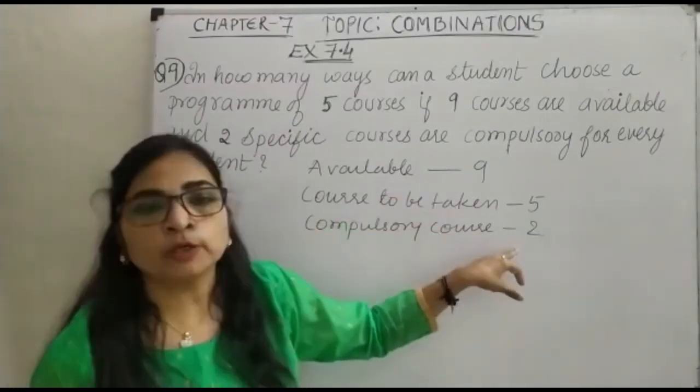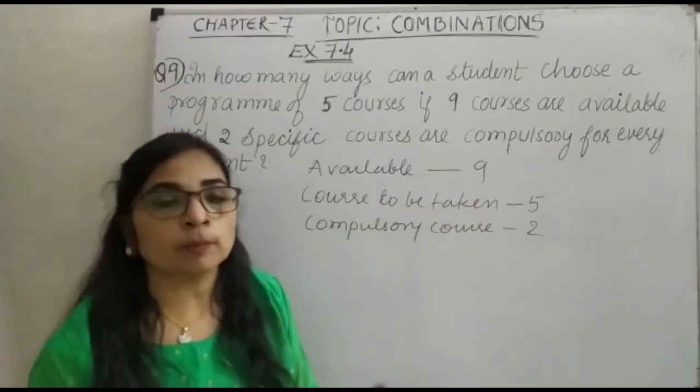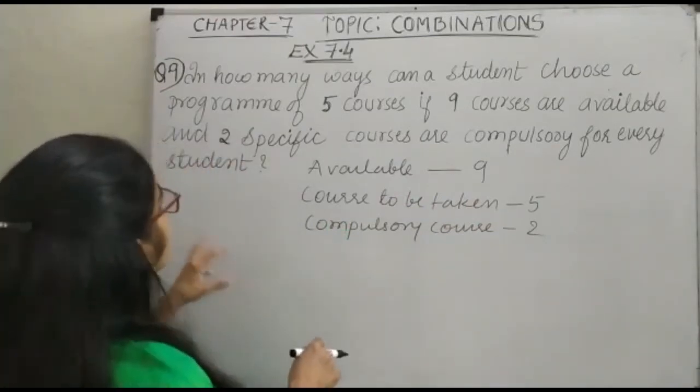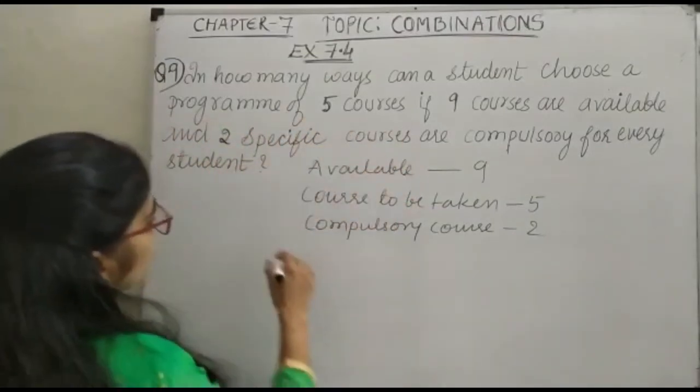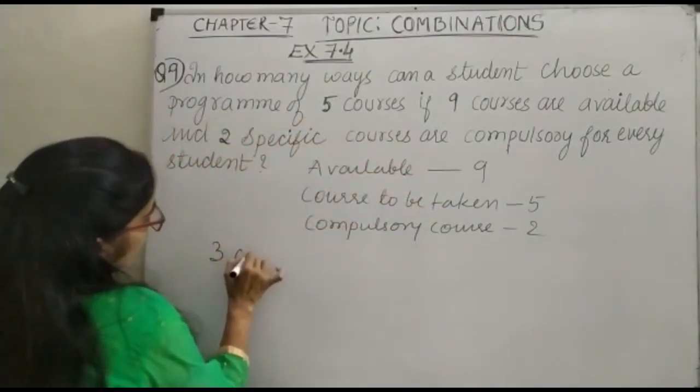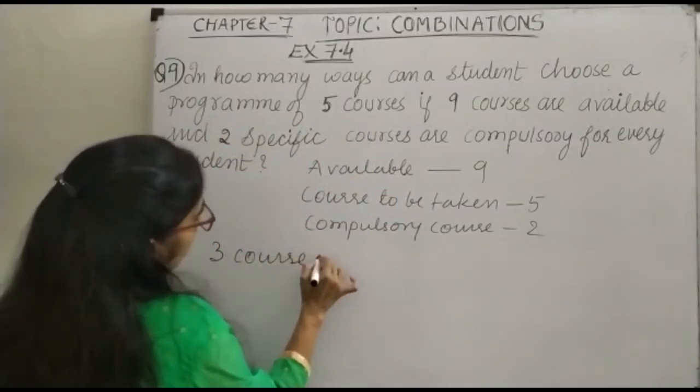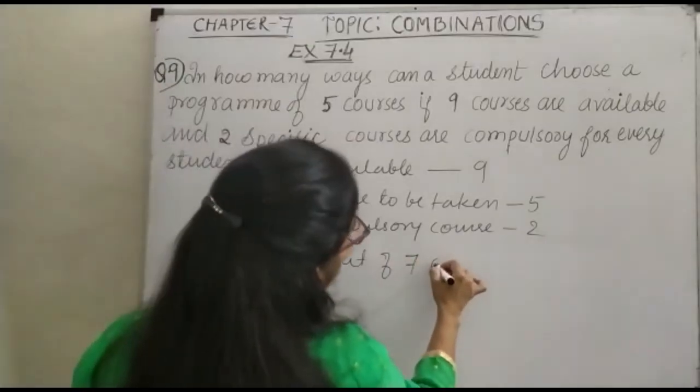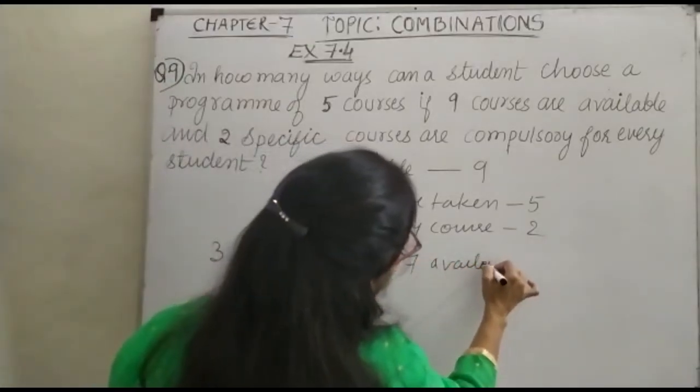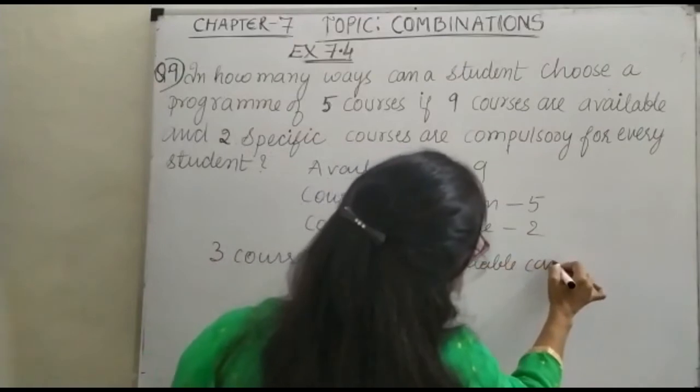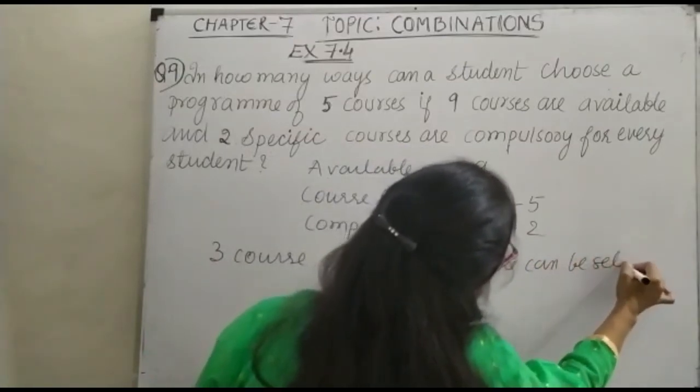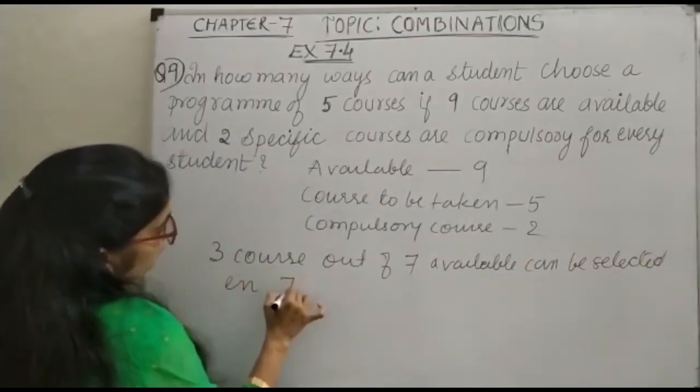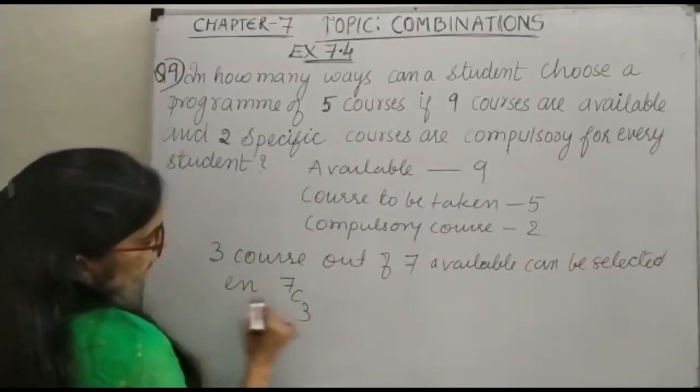So when you have to take 9 courses, how many courses you have available? 7. So we are here: In how many ways can a student choose a program? So the 3 courses out of 7 available courses can be selected in 7C3 ways.